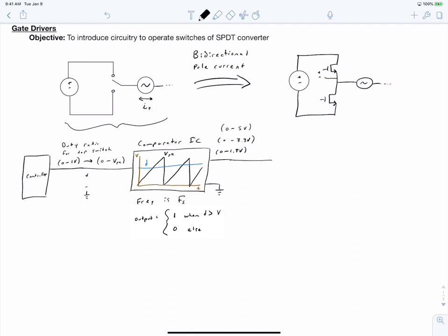You need some kind of circuit to convert this logic level signal into the actual voltage that should be applied across the gate source of your MOSFET. This circuit is called a gate driver.